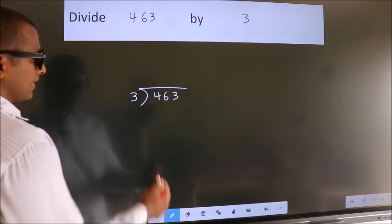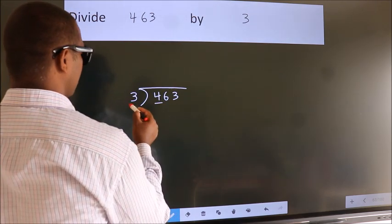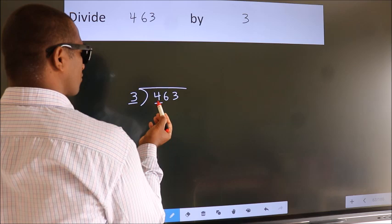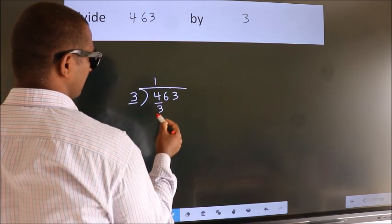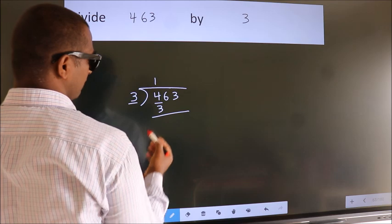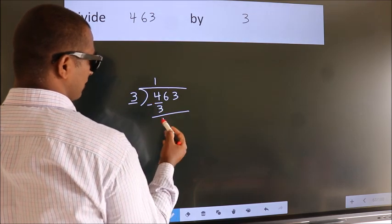Next, here we have 4, here 3. A number close to 4 in 3 table is 3 ones 3. Now we should subtract. We get 1.